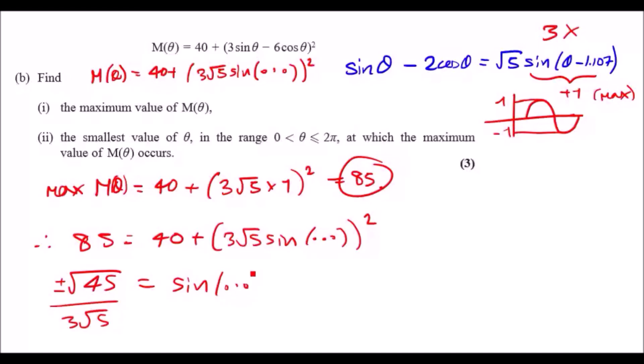Sine inverse this. Remember you got plus minus, you're going to get inside the blah blah blah. So θ minus 1.107, you're going to get what is it, π/2 or minus π/2, and that's it.